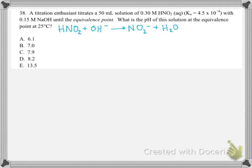In problem 38, we have the equivalence point titration problem where we have a weak acid reacting with a strong base. I've written this reaction out here. We have something strong and something weak — the strong thing is going to overpower the weak thing, so we'll need an ICF table.